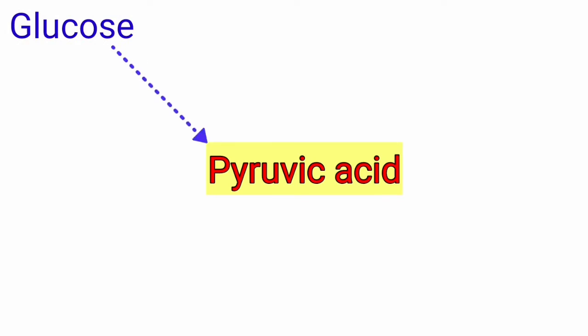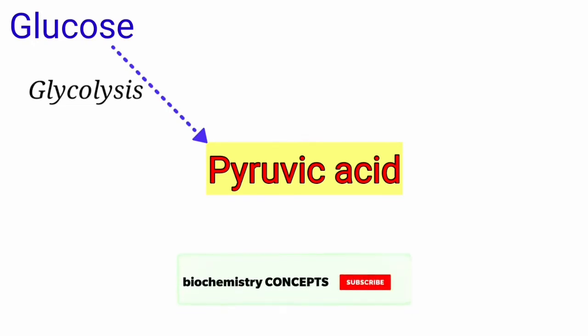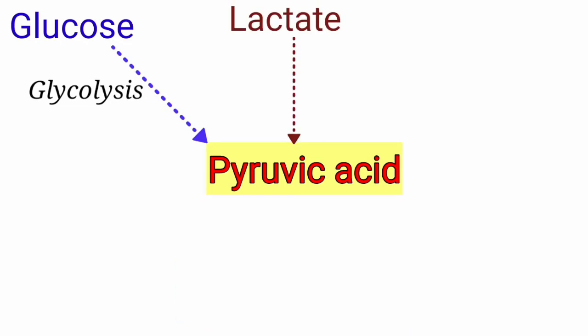Glucose on glycolysis, that is when it is oxidized in the presence of oxygen, it forms pyruvate. Lactic acid, when it is oxidized by the enzyme called lactate dehydrogenase, it forms pyruvic acid.